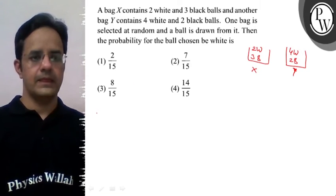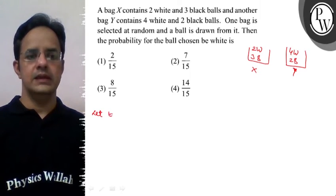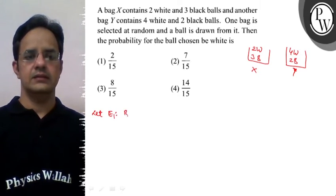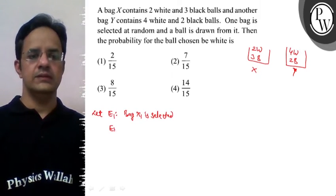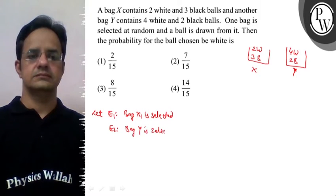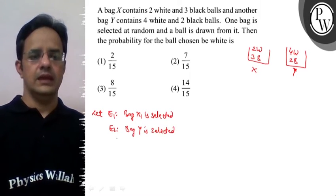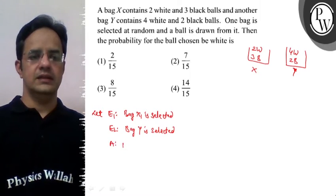So let E1 is the event that bag X is selected. And let E2 is the event that bag Y is selected. And let A is the event that white ball is drawn.